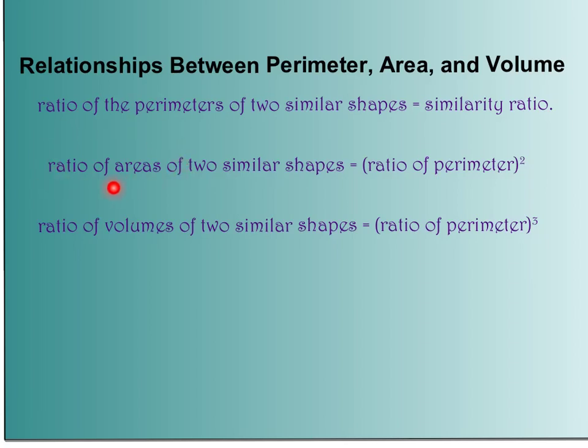For ratio of area, we have the ratio of the perimeter squared, which makes sense because area is squared units. So I'm going to take that ratio and square each of the values.